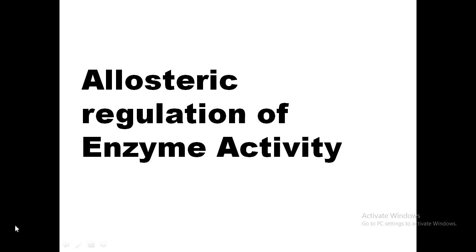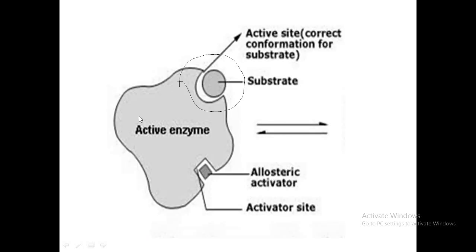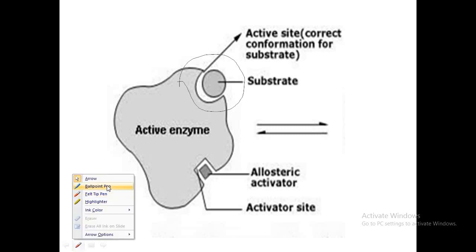Today we will discuss allosteric regulation of enzyme activity. Regulation of enzyme activity is done via several ways, such as covalent modification, but we are going to focus mainly on the non-covalent modification, which is allosteric regulation. If you look at this structure of an enzyme, everyone knows that an enzyme contains a substrate binding site where the substrate binds and the enzyme converts the substrate into product.